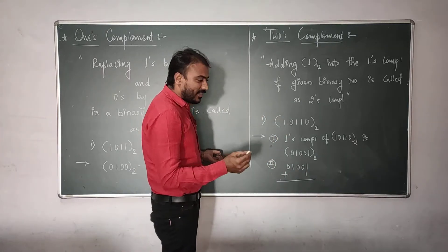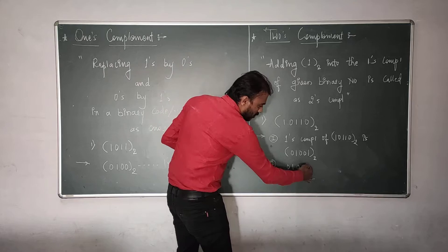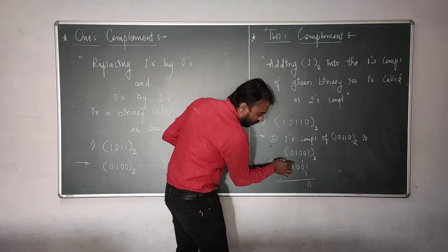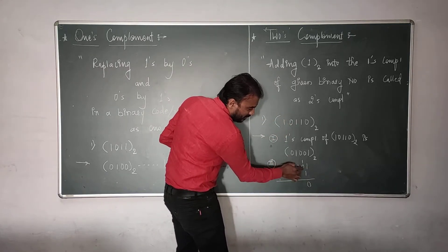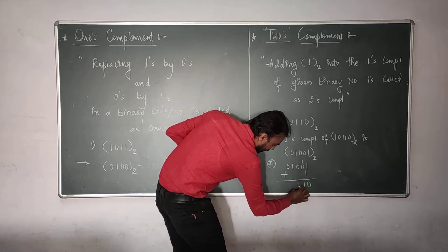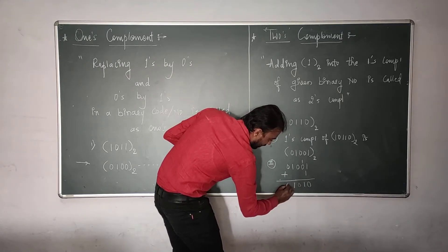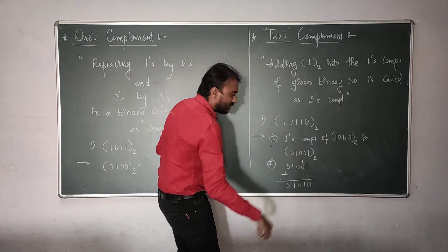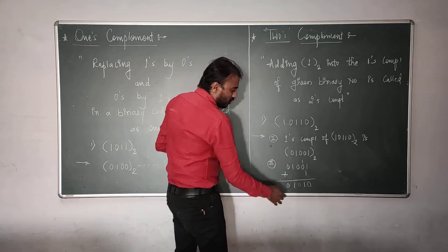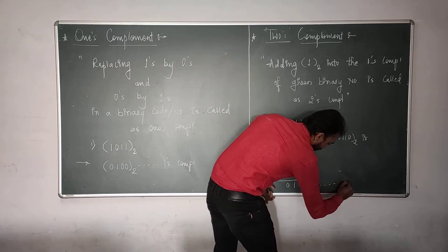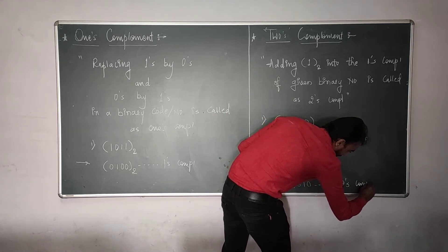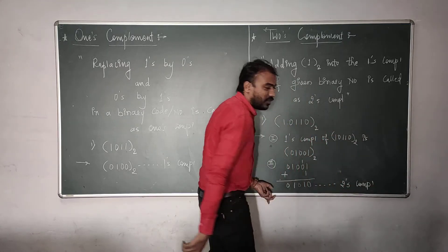You all know the rules of binary addition. So, 1 plus 1: sum 0, carry 1. 1 plus 0 is 1, and the remaining digits stay as they are. So, this is the final answer — this is the 2's complement of the given number.